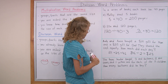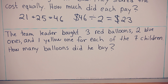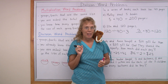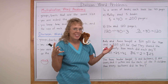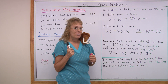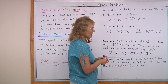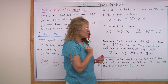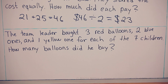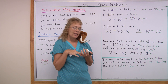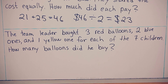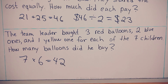The team leader bought three red balloons, two blue ones, and one yellow one for each of the seven children. How many balloons did he buy in total? Since we don't know the total, it might involve multiplication. There are three red, two blue, and one yellow for each child — another clue word is 'each,' which signals multiplication or division. How many balloons does each child get? You add three plus two plus one — six balloons for each child. Then multiply: seven children times six balloons each gives 42 balloons total that the team leader bought.